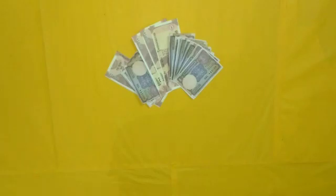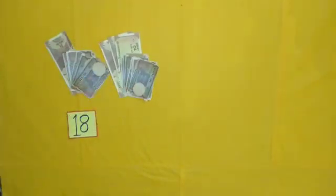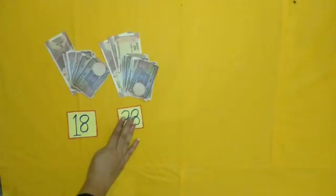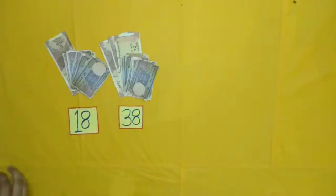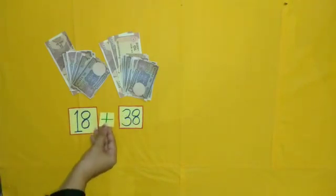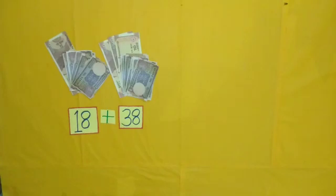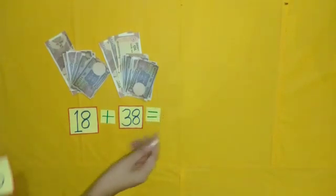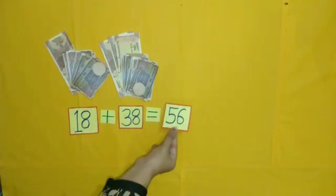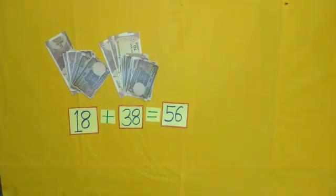By adding rupees 38 more in rupees 18, the money is becoming more. So, when the notes are increasing, we will add. By adding rupees 38 more in rupees 18, how much money does it become? Yes, rupees 56.